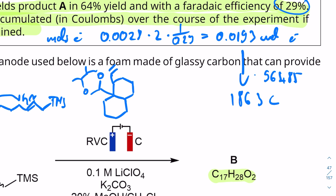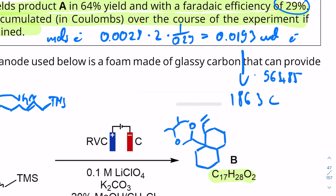So that is our product. Let's double-check the molecular formula: 17 carbons, 28 hydrogens, and 2 oxygens — correct. So that's going to be compound B. I feel like this was slightly better because there is a pretty unambiguous way of figuring out the mechanism.